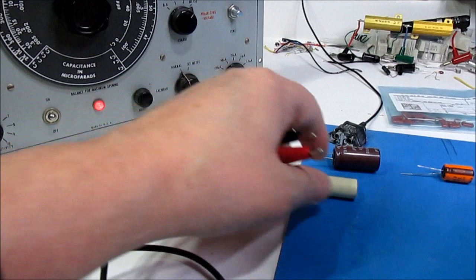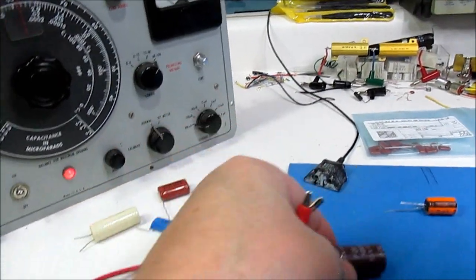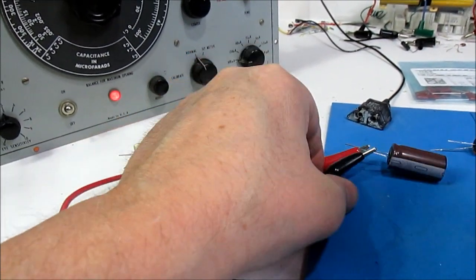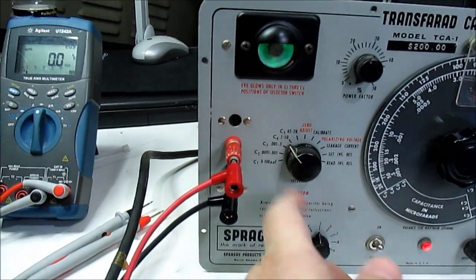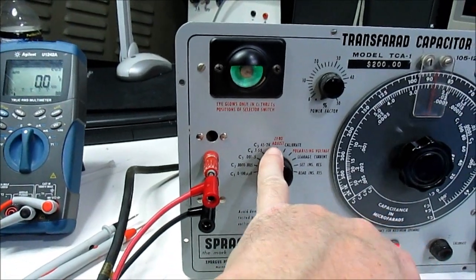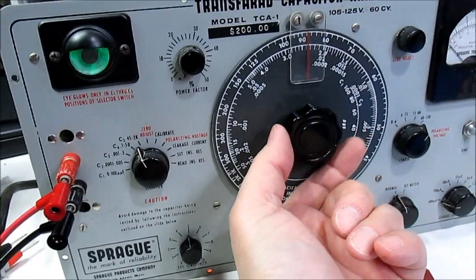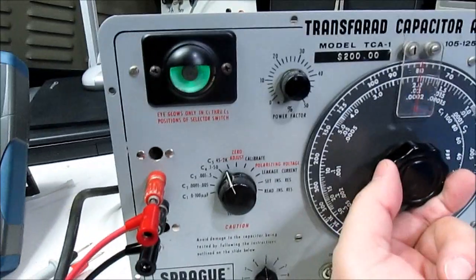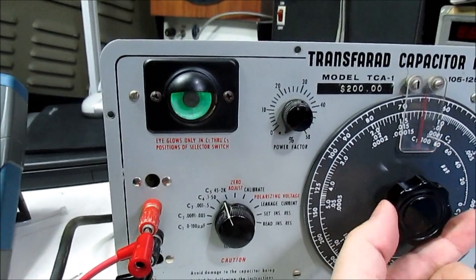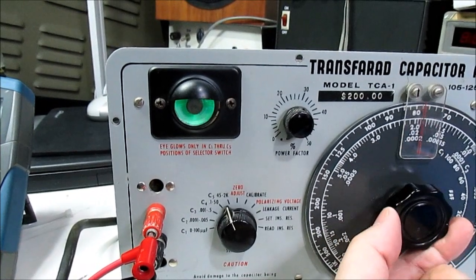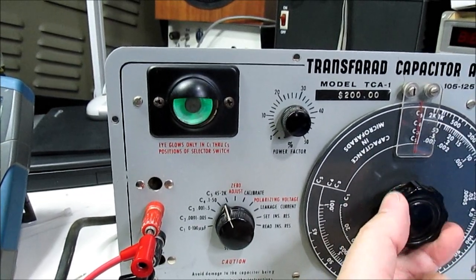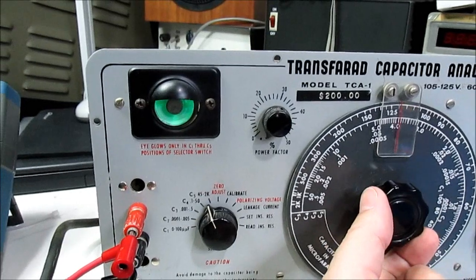Let's move on to this one. This is 82 microfarad. And for 82 microfarad, it looks like we need to be on this scale, C5, which would go from 45 microfarad to 2000 microfarad. And that would be the top scale. 82 microfarad should be around here somewhere. Do we have anything happening on this at all? This doesn't look so good either.